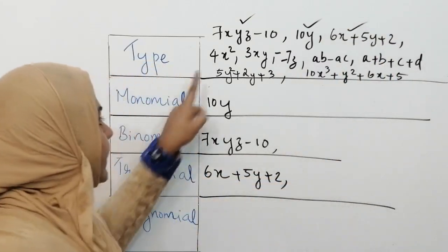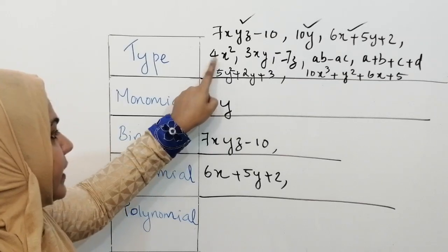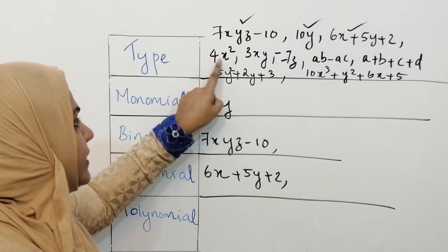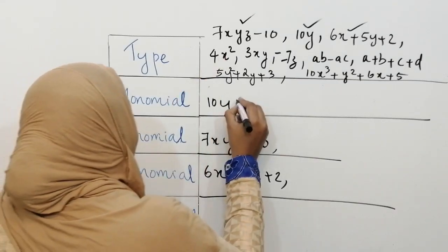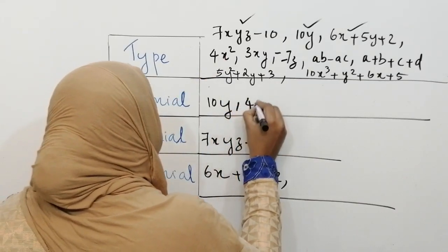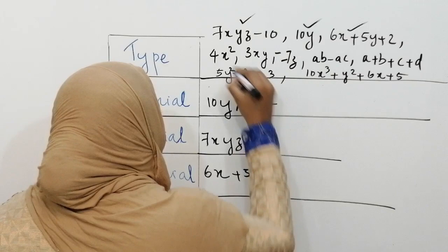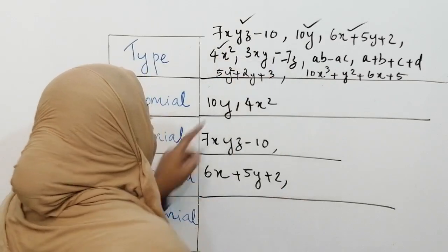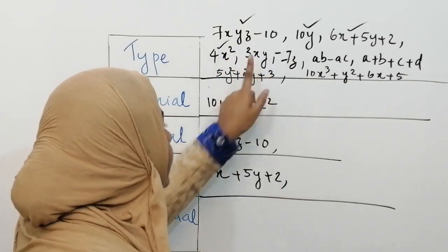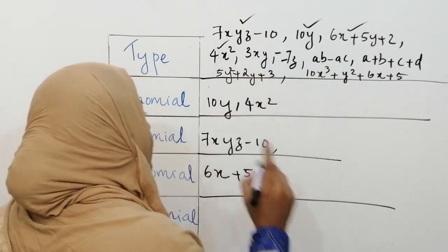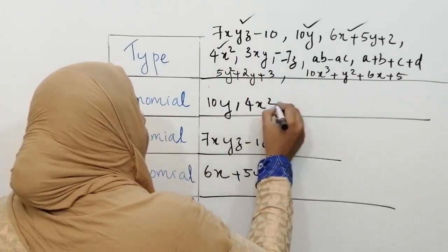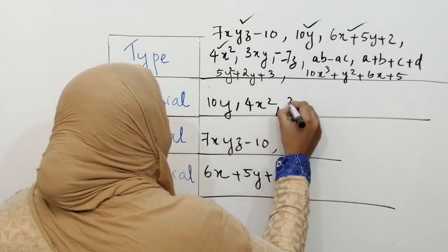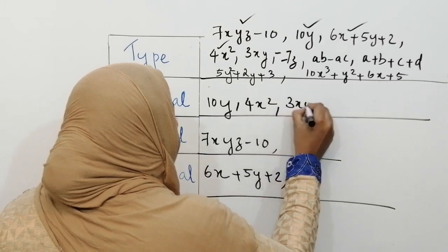Next expression is 4x squared — here you can see only one term, so that is monomial. Next, 3xy — that also has only one term, so it is monomial.